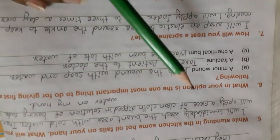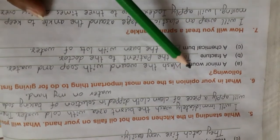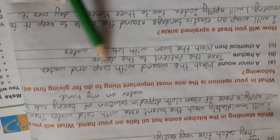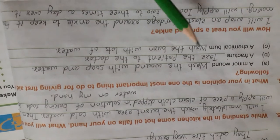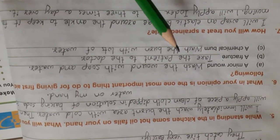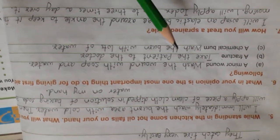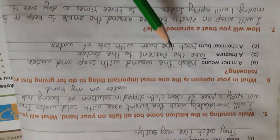Question number 6. What, in your opinion, is the one most important thing to do for giving first aid in the following. A minor wound. So simply wash the wound with soap and water. A fracture. Take the patient to the doctor. In fracture case, you will have to go to emergency or doctor because you have no idea if fracture has happened or not.